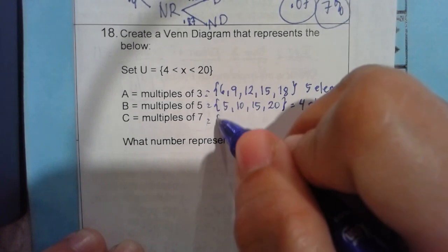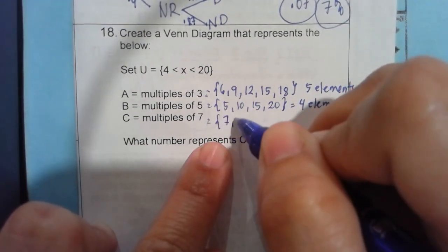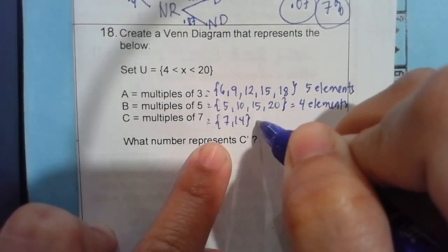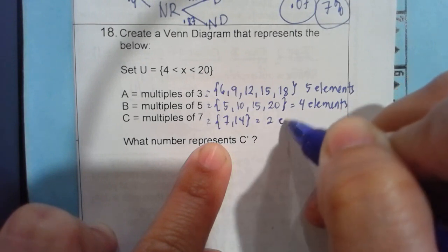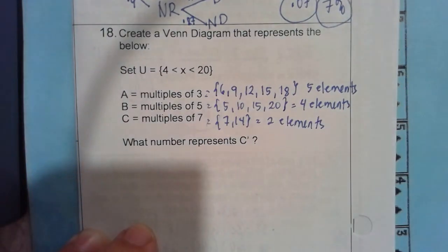Next, multiples of 7. We can start at 7 and then 14. That's it. It's not 21. So that's the end.